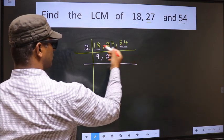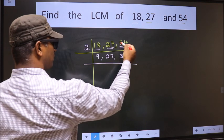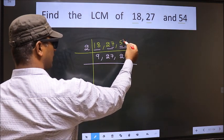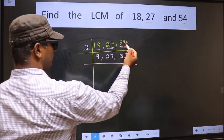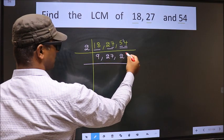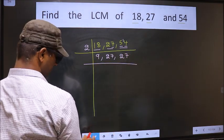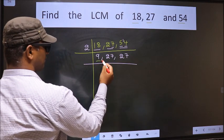A number close to 5 in the 2 table is 2 twos, 4. 5 minus 4 is 1, carried forward making it 14. When do we get 14 in the 2 table? 2 sevens, 14.